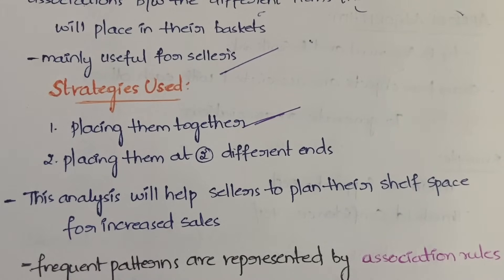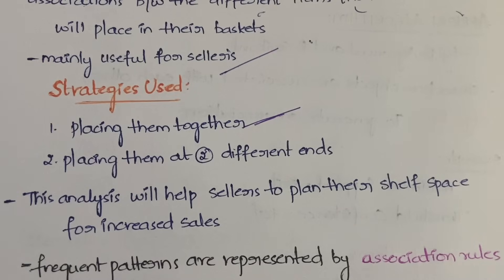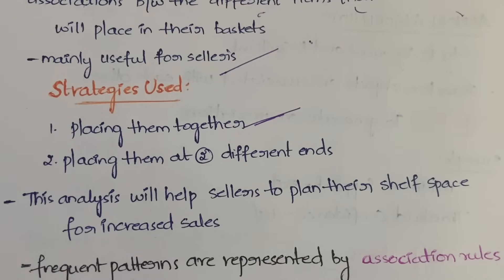Another strategy is placing low-sales items near high-sales items, so customers coming for the popular item may also buy the slower-selling one. Or items can be placed on different floors, so while traveling between floors the customer may buy additional things. Overall, market basket analysis identifies the relationship between items in a customer's basket to understand customer buying habits.